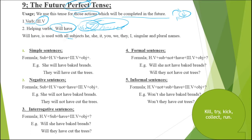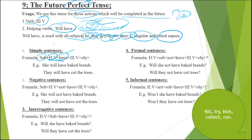Will have is used with all subjects: he, she, it, you, we, they, I, singular names and plural names. As usual we have got five kinds of sentences. The first is simple sentences — those which make a simple statement. Formula: subject + will + have + third form of verb + object + full stop. For example: 'She will have baked breads' and 'They will have cut the trees.'